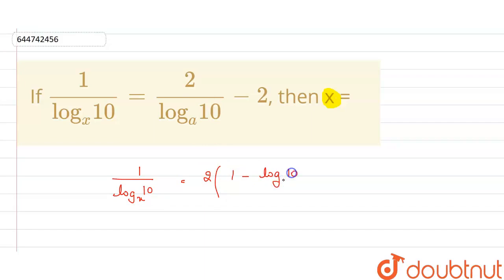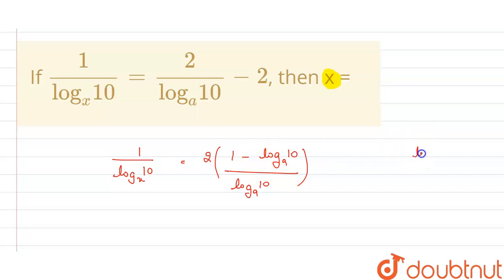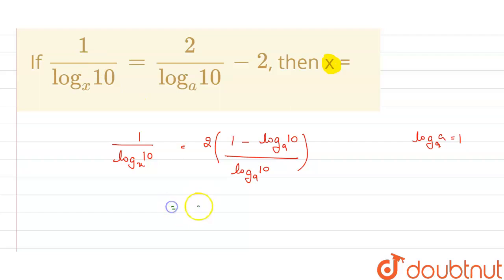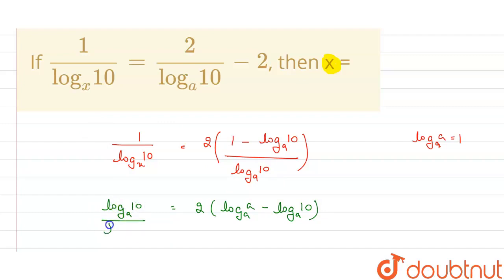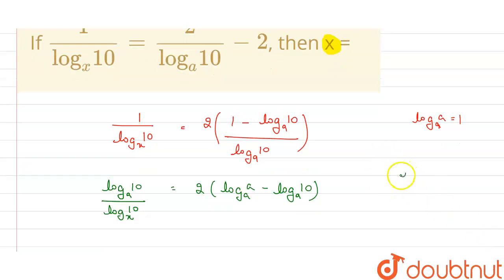Taking LCM, we will have 1 minus log 10 base a, upon log 10 base a. Now, log a base a equals 1. So this becomes 2 into log a base a minus log 10 base a. Taking this log to the left-hand side, we get log 10 base a upon log 10 base x.